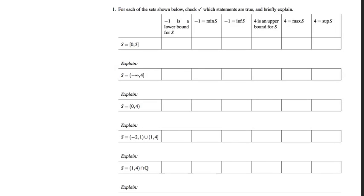The first column asks: for which of these five sets is negative 1 a lower bound? Was it a lower bound for the first set, the closed interval from 0 to 3? Yes. So negative 1 was a lower bound for that one. How about the second set? No. Third set? Yes. Fourth set? No. Fifth set? Yes.